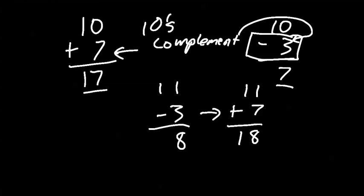Now let's look at 2's complement — note that's complement with an E, not an I, so it's very different. Suppose I have a binary number like 1, 1, 0, 1, 1, 0, and I want to subtract away a value.